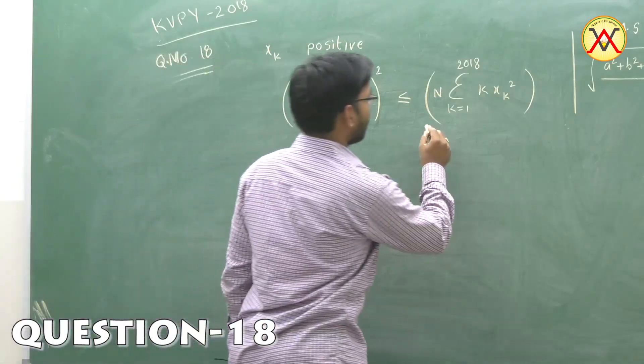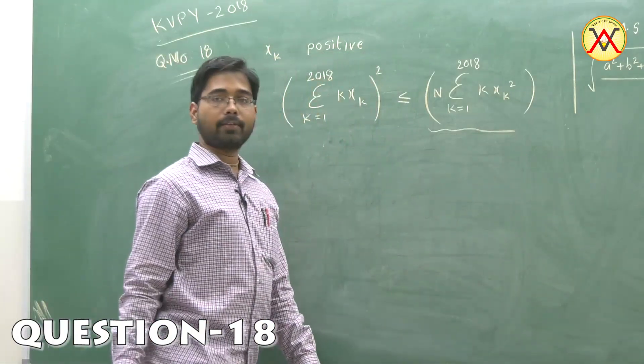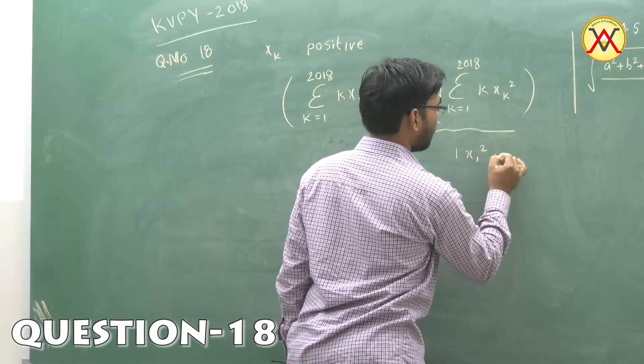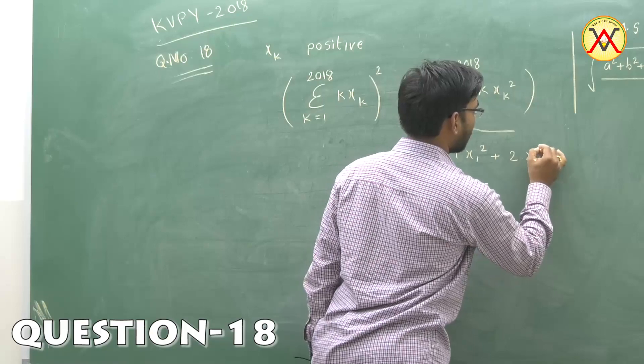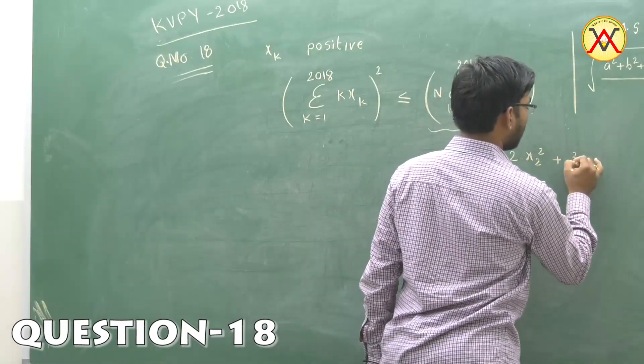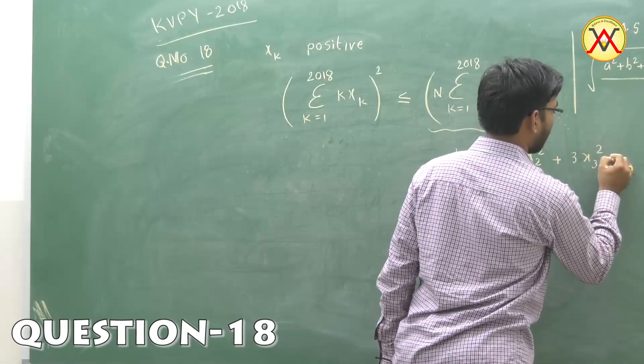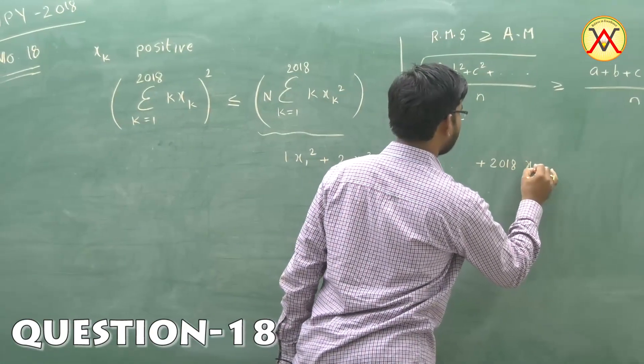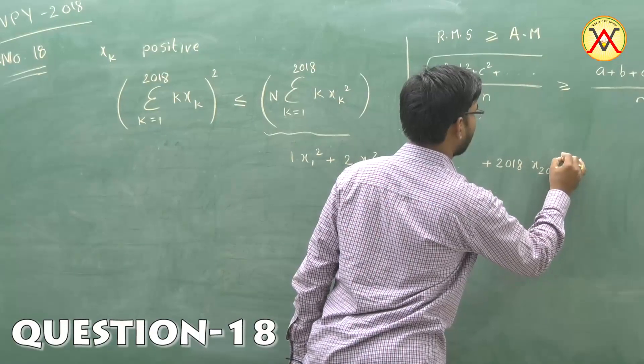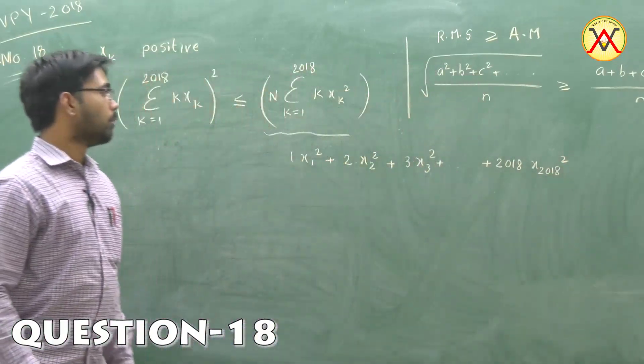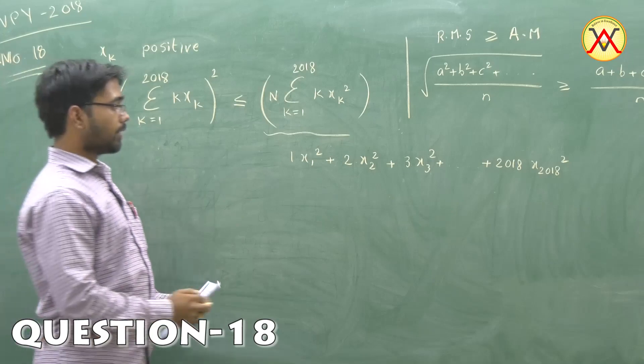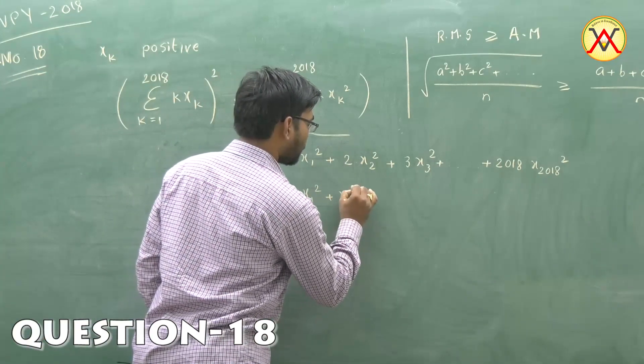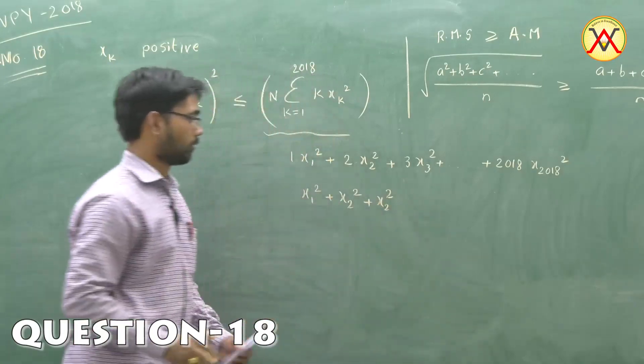On the right-hand side, we have something like this: 1·x₁² + 2·x₂² + 3·x₃² + ..., or equivalently x₁² + x₂² + x₂² + x₃² + x₃² + x₃² + ...